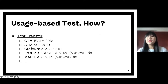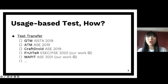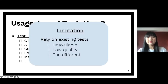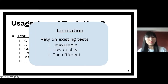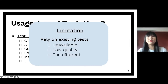Generating usage-based tests is actually really hard. But the good news is that in the testing community, we've recently started tackling this problem using a technique called test transfer, which can transfer an existing test from one source app to a new target app. We also have two recent works in this area: Fruiter and MapIt. However, the biggest limitation is that we have to rely on existing tests to transfer from, which can be hard to find, may be low in quality — garbage in, garbage out — or the source and target apps look too different to make the transfer successful.